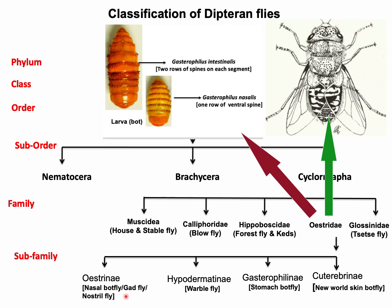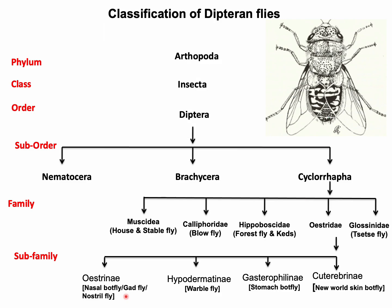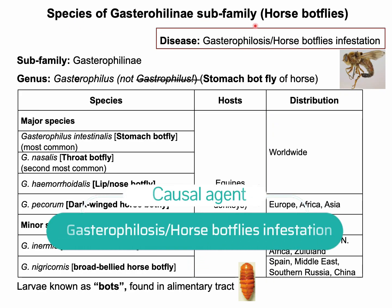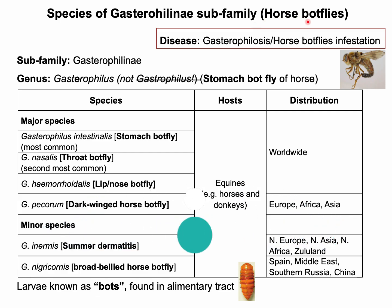Larvae of these flies are stout, thick, and obligatory endoparasites of different mammals. There are four important sub-families. Under the sub-family Gastrophilinae, the flies are commonly known as stomach bot flies of equines and cause gastrophilosis or horse bot fly infestation.